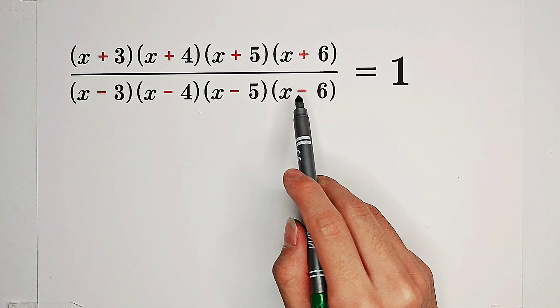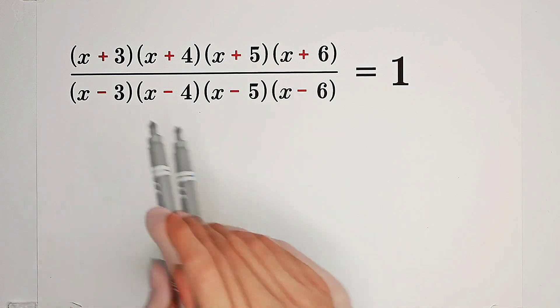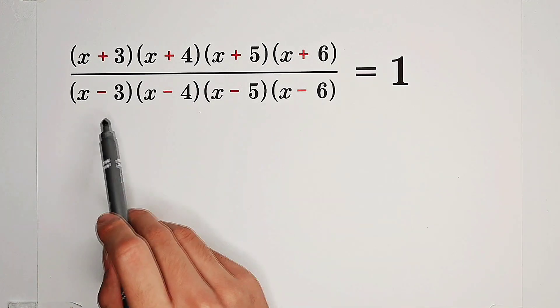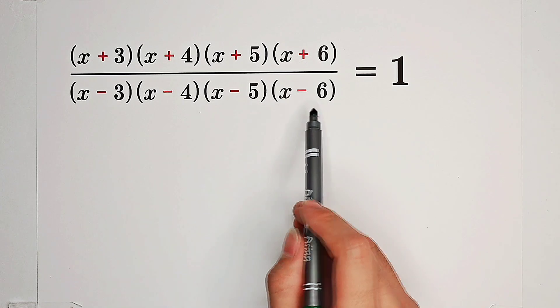They both have four divisors. And if we have a look at the divisors, you can see 3, 4, 5, 6, negative 3, negative 4, negative 5, negative 6.